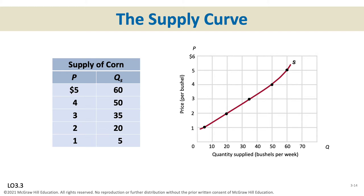Here's an individual supply curve, just like we started with an individual demand curve. At a price of $5, this firm will supply 60 units; at $4, they'll supply 50 units; at $3, 35 — and so on. That information is graphed to show an upward sloping, direct relationship for the supply curve. The demand curve had a downward sloping, inverse relationship between price and quantity.